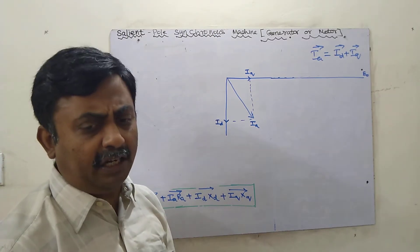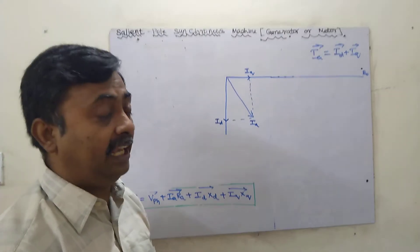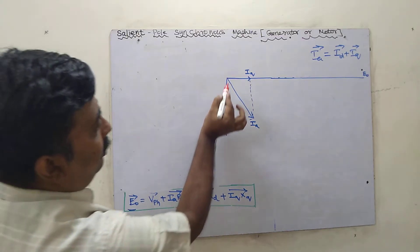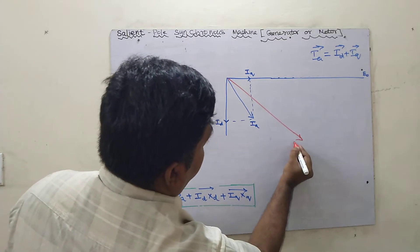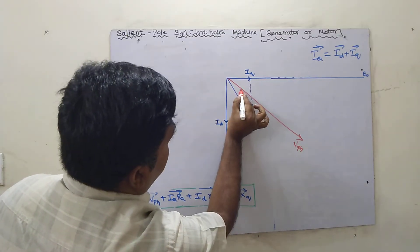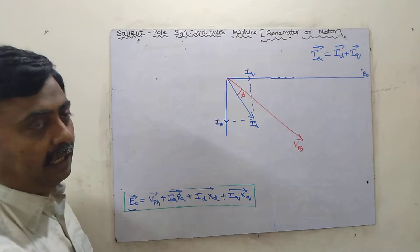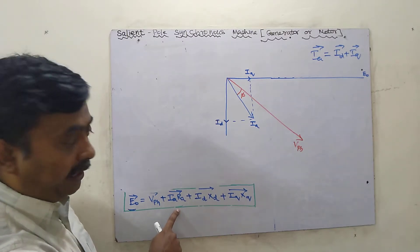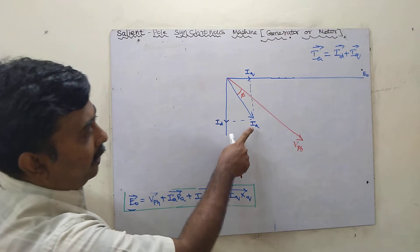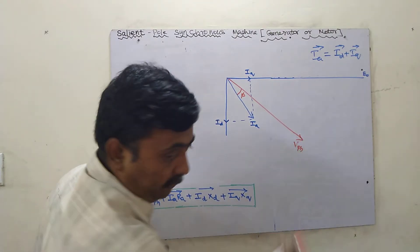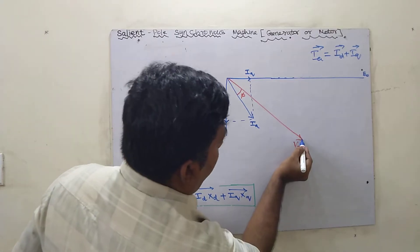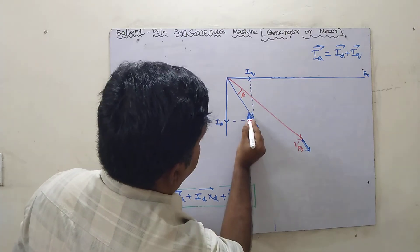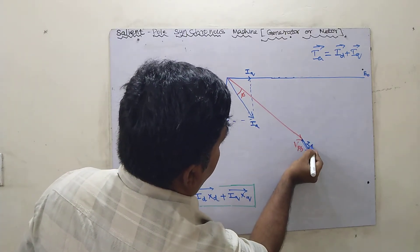We normally consider lagging power factor load. For a lagging power factor, V-phase will be at angle phi above the current IA. The current IA lags V-phase by angle phi, where cos(phi) is the power factor. The drop IA·RA will be in the direction of IA, so we add IA·RA in the direction of IA to V-phase.